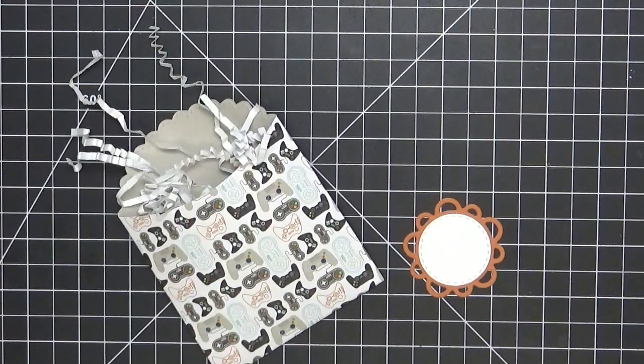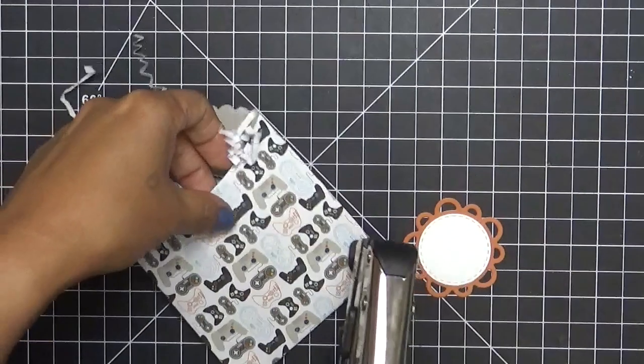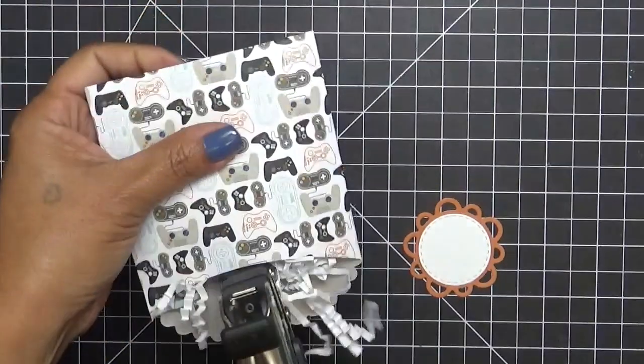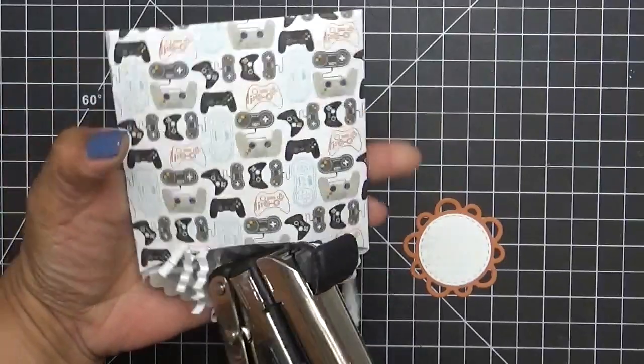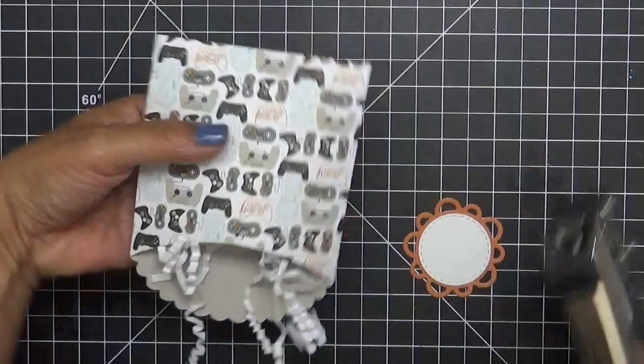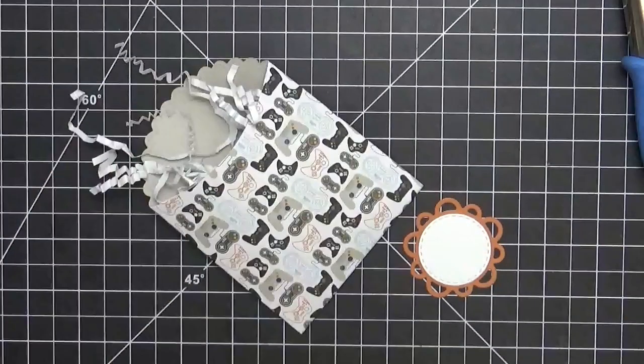Let me grab my hole puncher. Here we go. Let me see which. OK, so we are going to go ahead and we're just going to punch a small hole right here. And I'm going to use some black twine for this. Let's see. It's going to go ahead and punch it right there. OK. And let me grab some black twine.